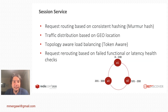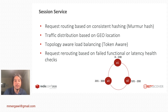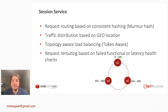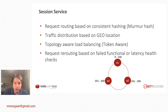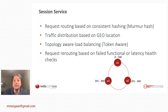The second tier was the session service, which handled the real logic. Its responsibilities included request routing based on consistent hashing — we used Murmur for our hashing — as well as traffic distribution based on geolocation. The service was aware of the topology of the underlying data tier.